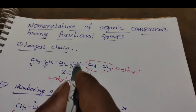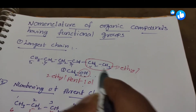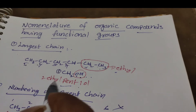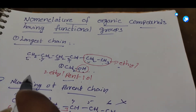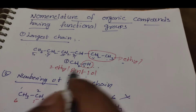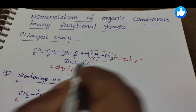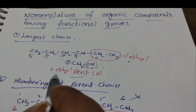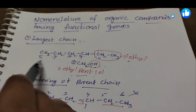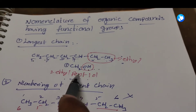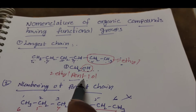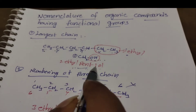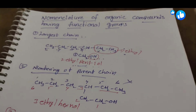In the second position they have a substitution — an ethyl group. The root word is 'pent', meaning five carbons are present. In the first position carbon they have the alcoholic group, so the name of the compound is 2-ethyl pentanol. Next rule is the numbering of the parent chain.